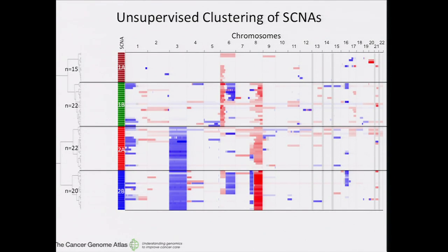I did hierarchical unsupervised clustering using copy number amplifications as well as deletions, and as you might expect, they separate very nicely into two main groups. Cluster 1, on the top, does not have a loss in chromosome 3, while cluster 2 on the bottom is defined by this chromosome 3 loss. Within these two clusters, you can further separate them: 1A is very quiet in terms of somatic copy number alterations, and 1B is characterized by a gain in 6P as well as 8Q. Cluster 2B is characterized by a very high gain in chromosome 8Q as well as overall increased aneuploidy.